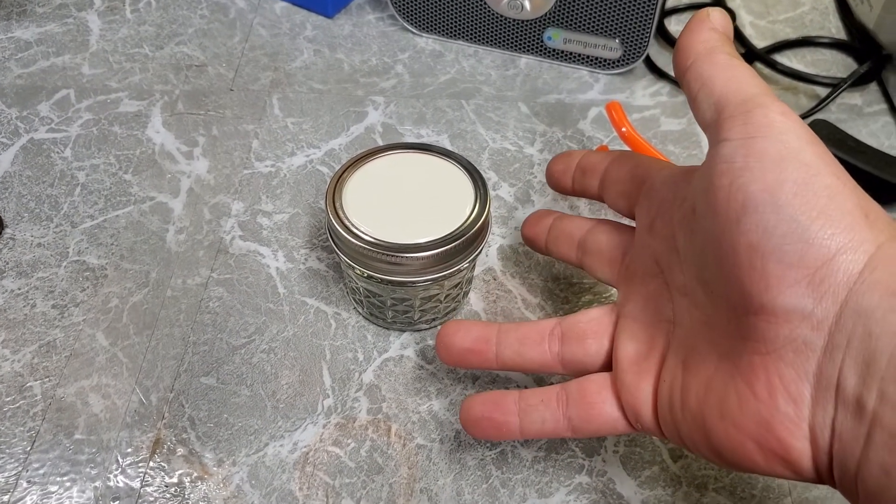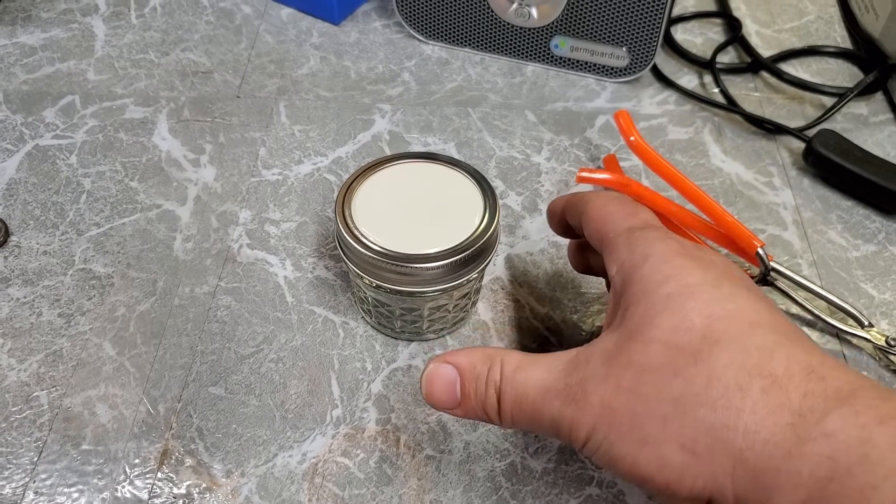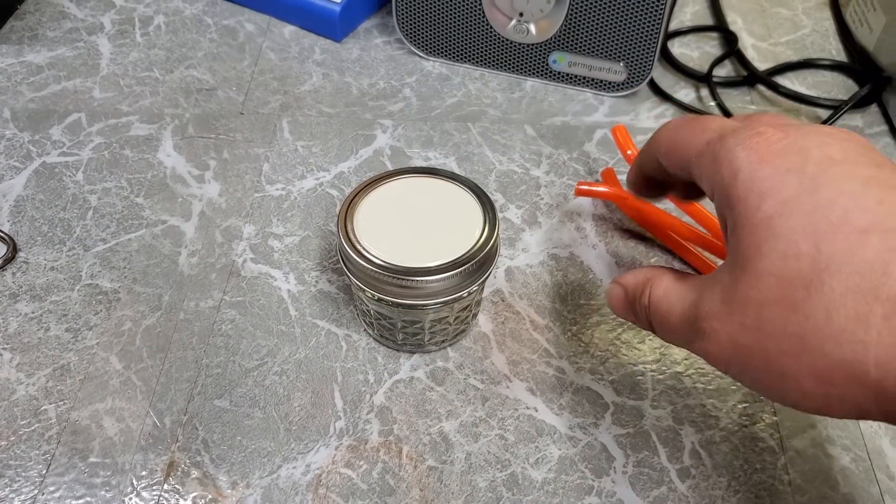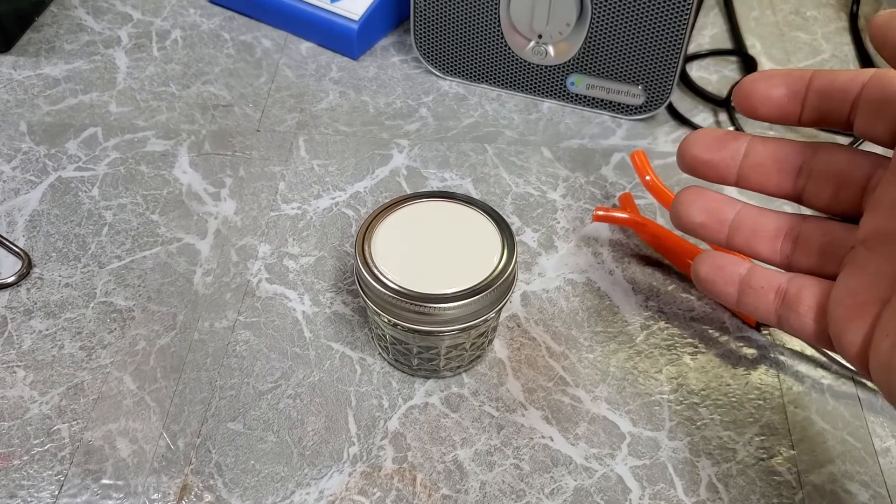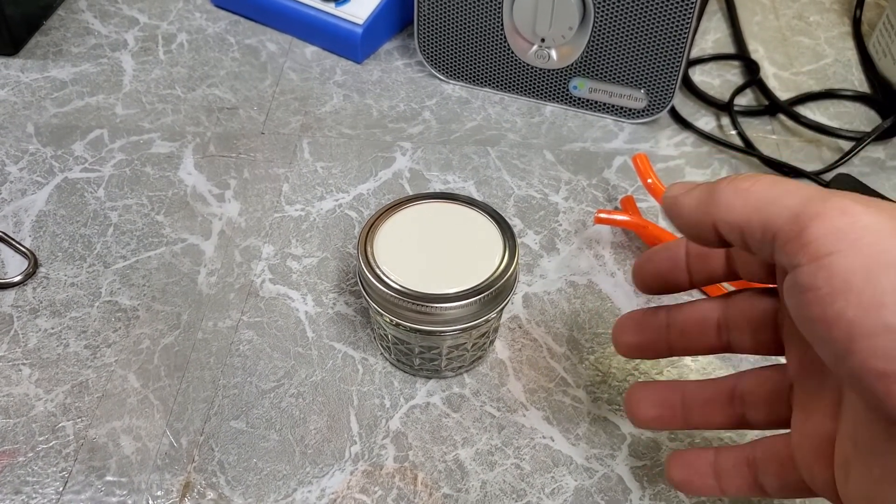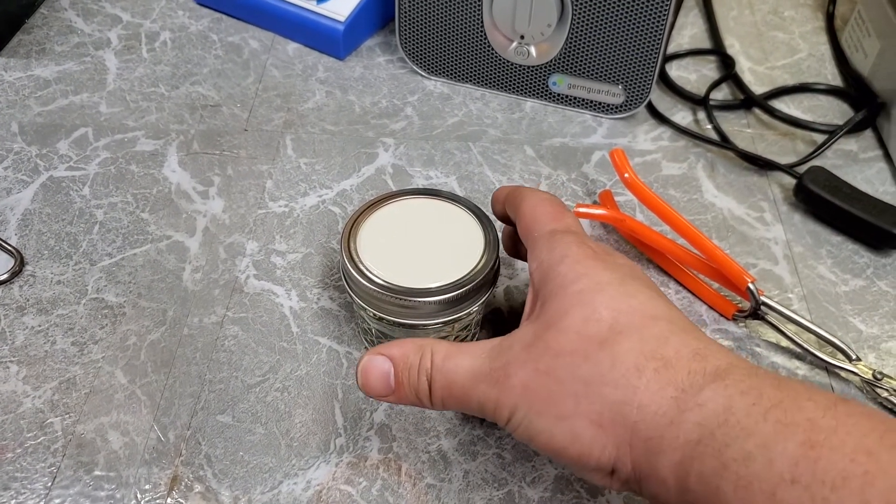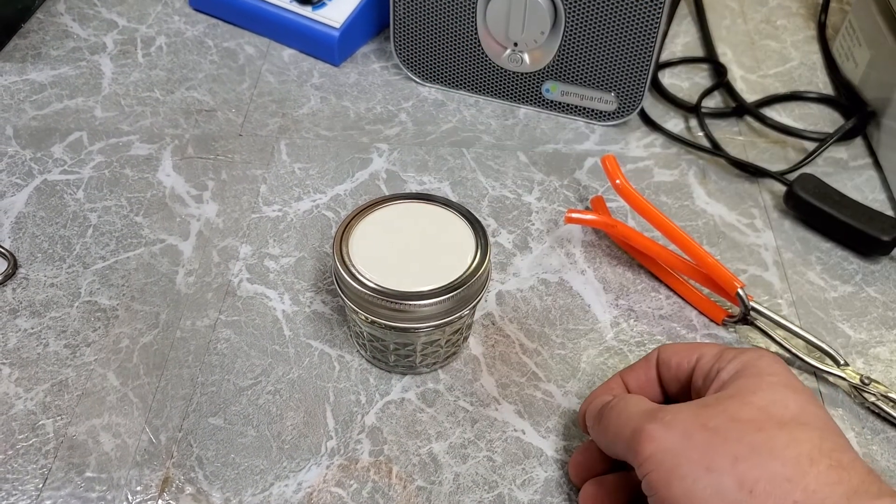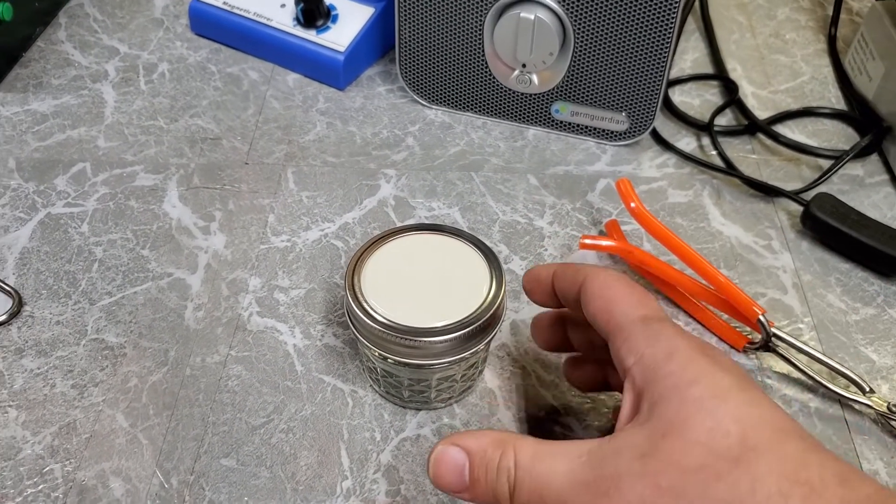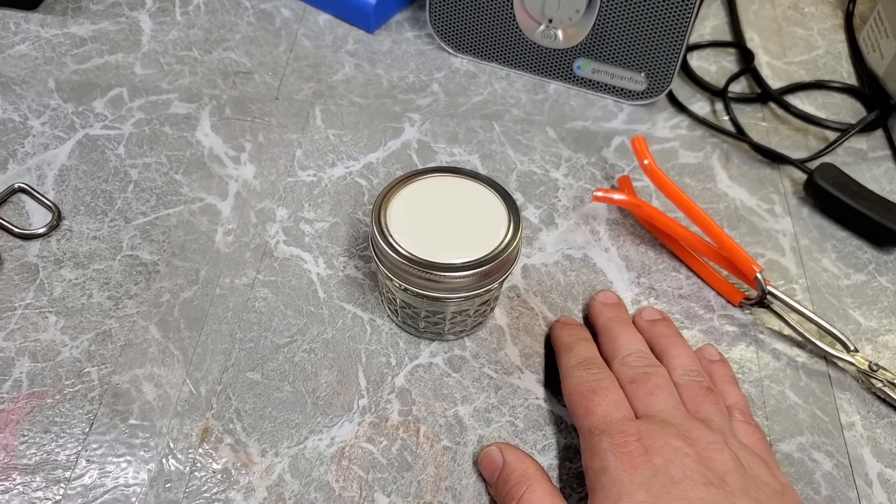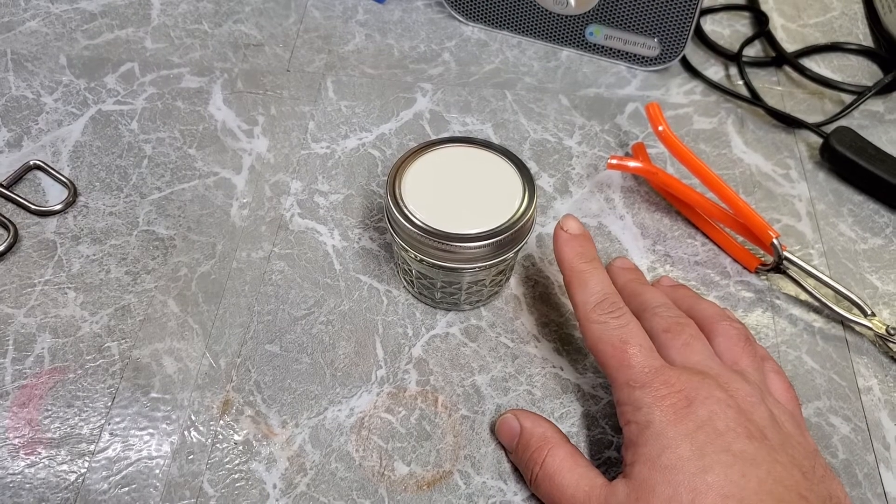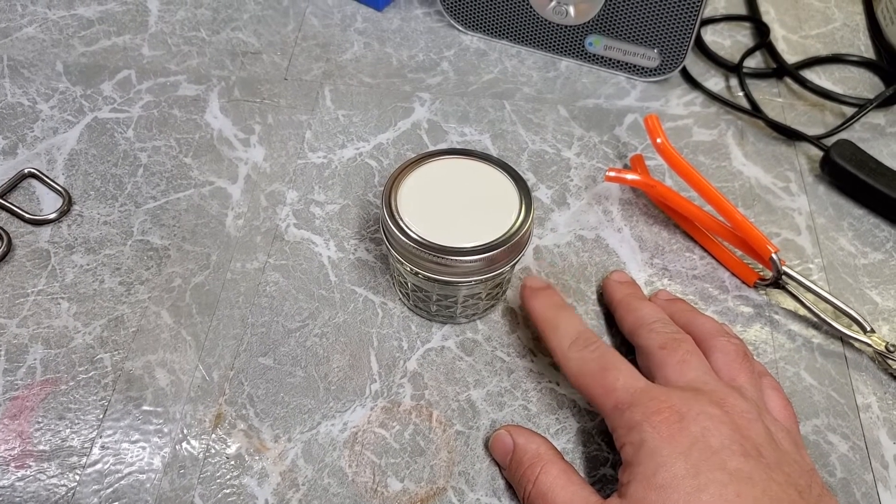Once this is colonized to the point that you want it, you can either shake it up, break up the mushroom mycelium, and then you could pour that into other jars and kind of exponentially grow your liquid culture collection or your liquid culture stock. Or once this is colonized to the point you want, you can just pour that colonized liquid culture onto, say, a sterilized rye grow bag. It's really all there is to it. This is a very simple and foolproof way to make liquid cultures for your mushrooms.